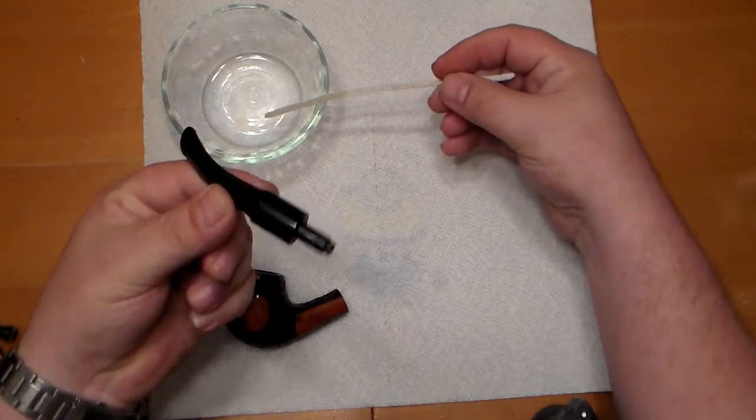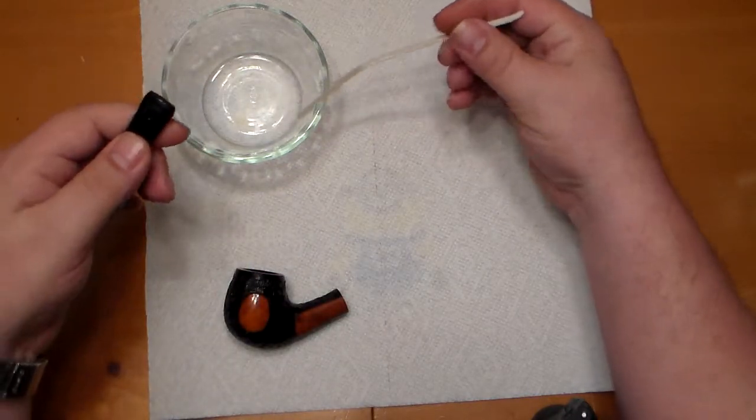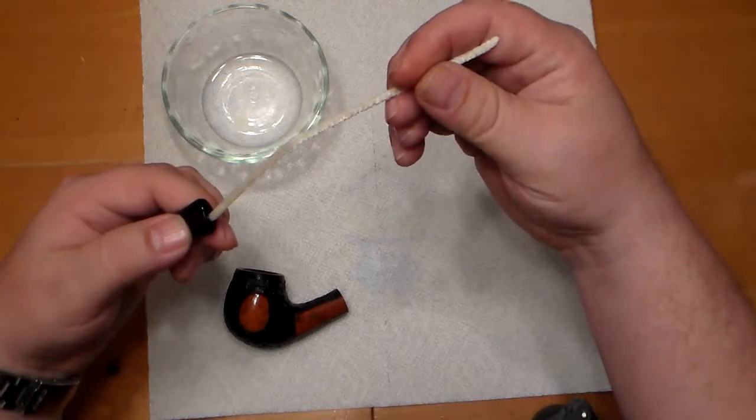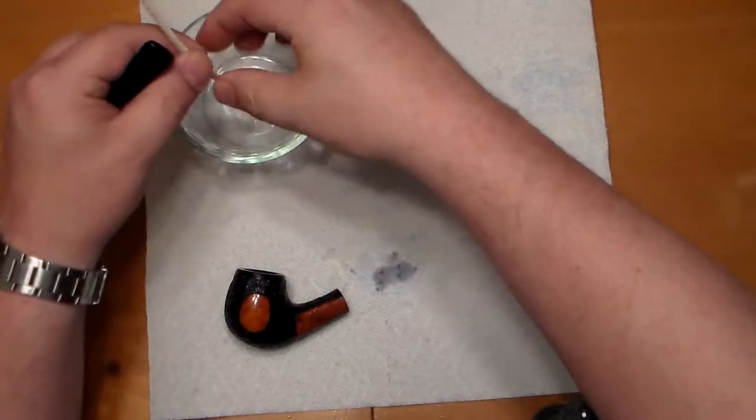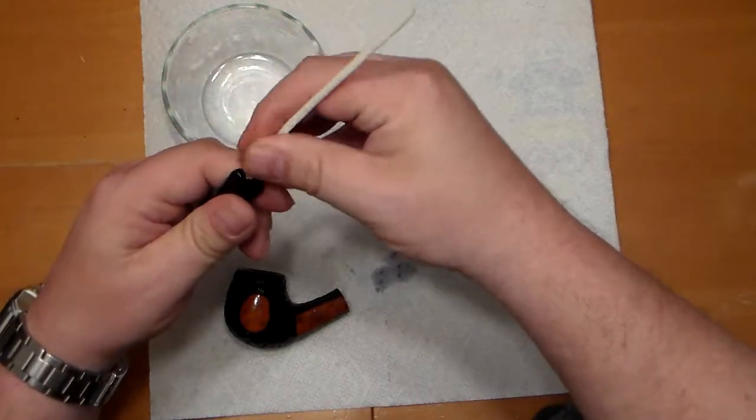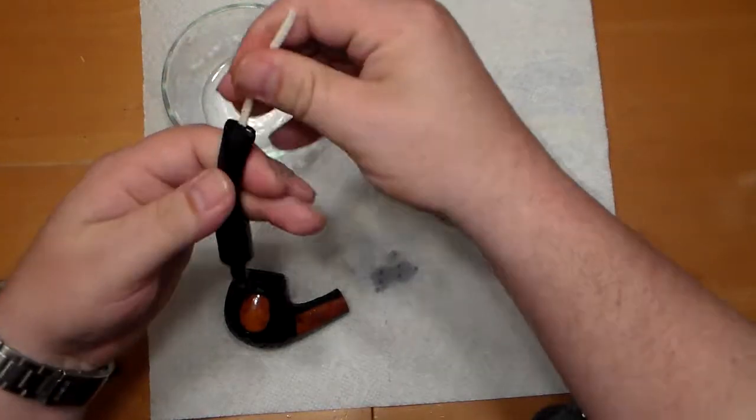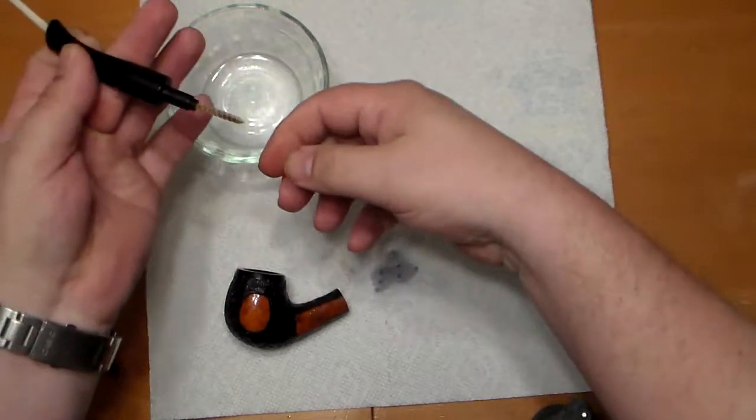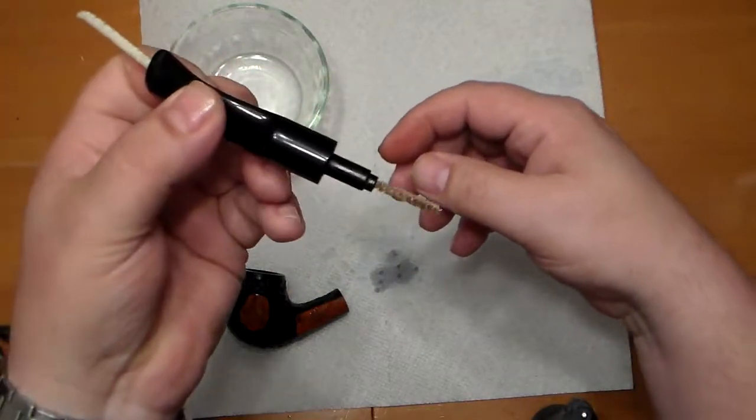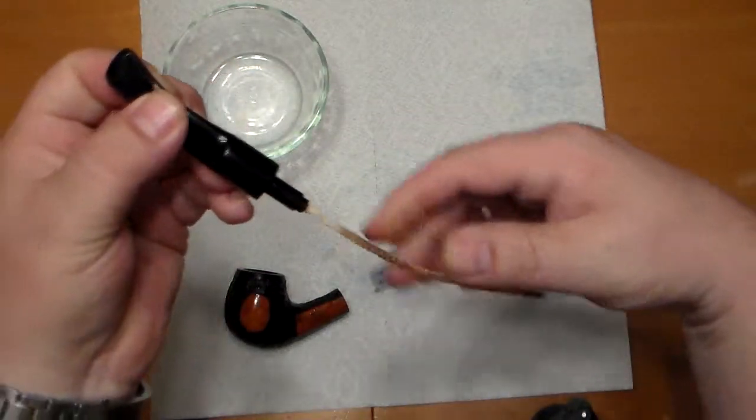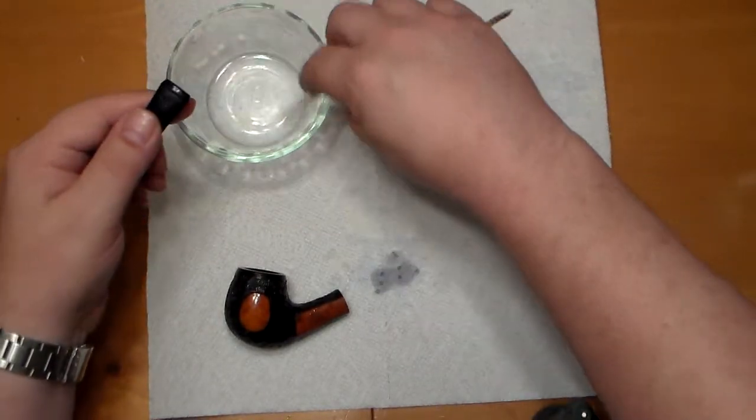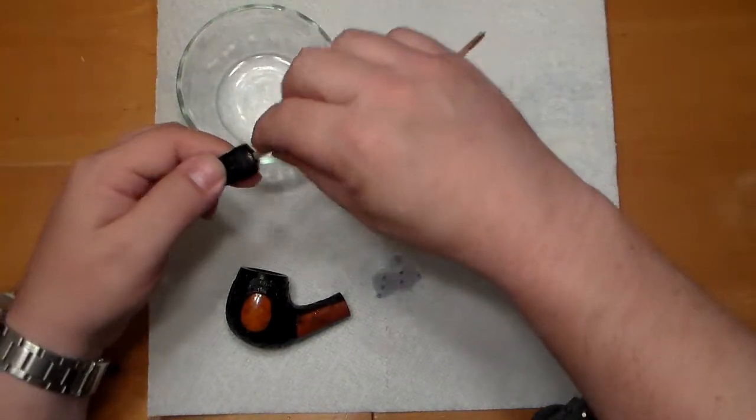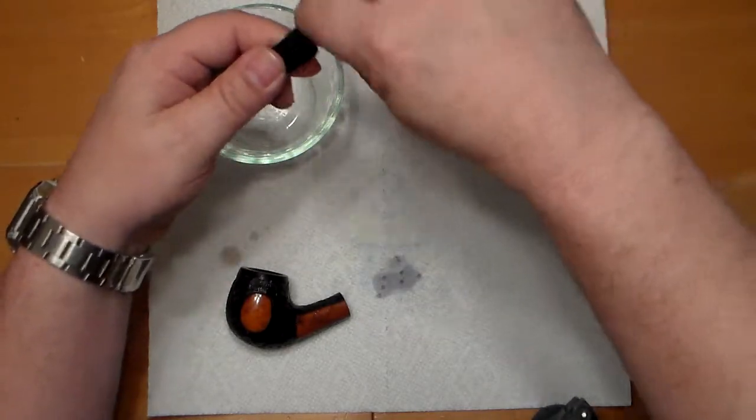I've cleaned this stem every time I've smoked it for as long as I've been using it, and it's been a while since I've done a deep cleaning on a pipe like this. You just dip a little bit of the alcohol onto a pipe cleaner and run it through, and you can see it's picking up all that crud that's in there. I'll dip it and run it through again the other way, and I'll do that until it comes out clean.